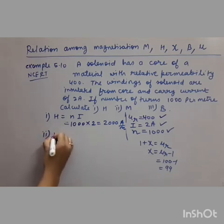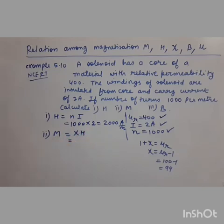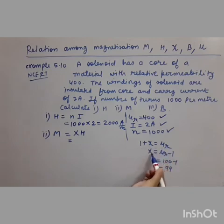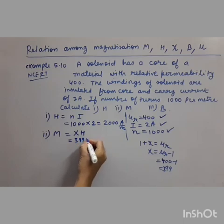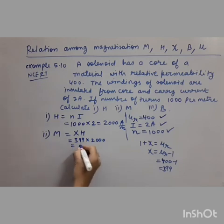For the second quantity, M: once we have H, we use M = χH. Chi is not directly given but is related to μᵣ by: χ = μᵣ − 1 = 400 − 1 = 399. Therefore M = χH = 399 × 2000, which gives approximately 8 × 10⁵ ampere per meter.